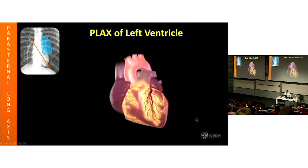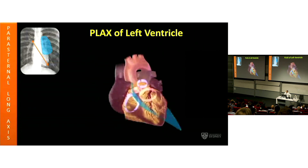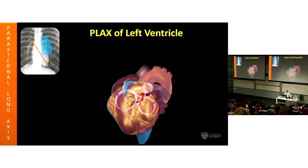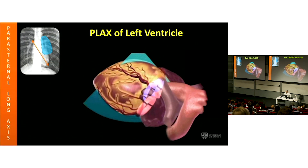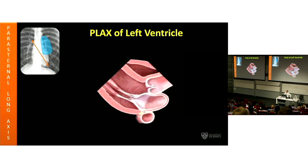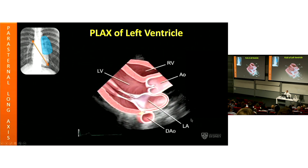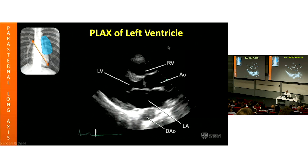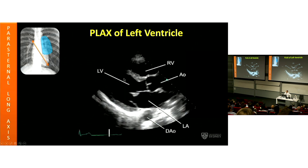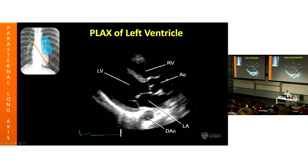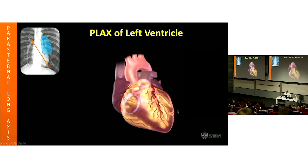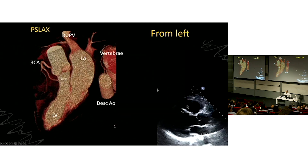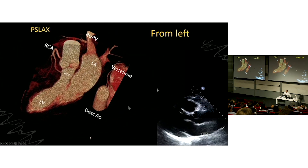Let's start with the most basic of images — the parasternal long axis view — which is the entry level where most people will have their first view. This parasternal long axis view as taken by echo is tomographic and is taken as if you are standing at the person's left armpit. Even though the transducer is in parasternal space, you're looking from the left side: the sternum is up here, the head is up here, the feet are down here, and this is the descending aorta. So get that perspective in your mind as you take that picture.